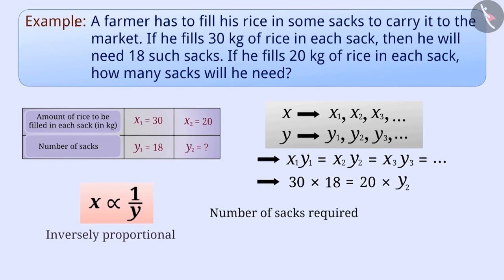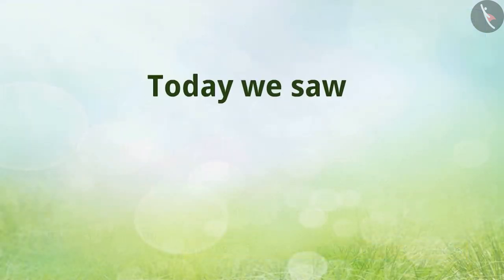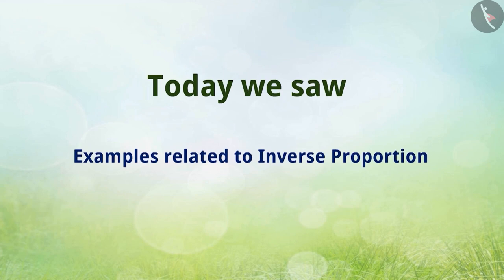Hence, the number of sacks required will be y2, which is equal to 30 into 18 divided by 20, which is equal to 27 sacks. So today we saw examples related to inverse proportion. In the next video, we will see some more examples related to it.